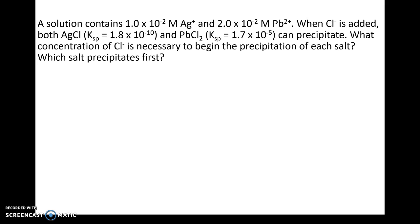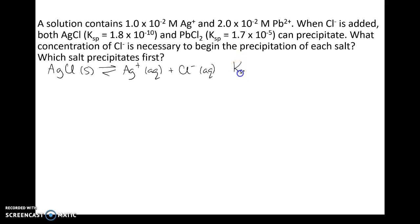Let's look at the equilibrium of silver chloride. In aqueous solution, solid silver chloride will react to make silver ions and chloride ions. The equilibrium constant Ksp associated with this is just the product of the concentration of silver ions and the concentration of chloride ions. If the product of the concentrations of these two ions exceeds the equilibrium constant, precipitation will occur. We can isolate chloride on the left-hand side of the equation.